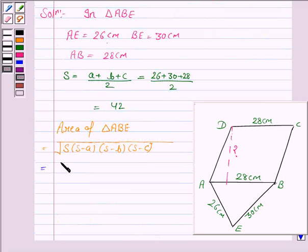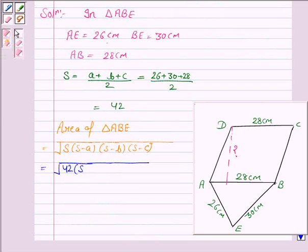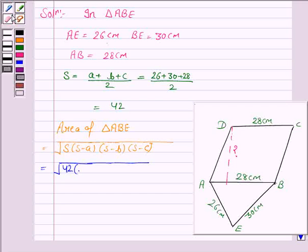Let us now substitute the values of S, A, B and C in this formula. S is 42, S minus A is 42 minus 26, 42 minus 30, and 42 minus 28.